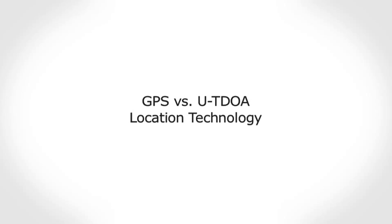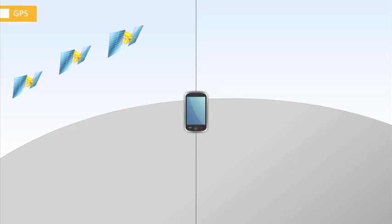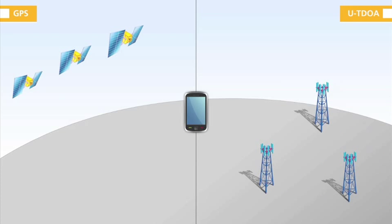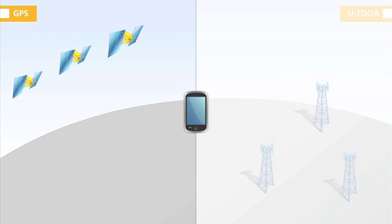The two main technologies used to locate mobile phones are GPS and Uplink Time Difference of Arrival, or UTDOA. GPS uses a chip within the mobile phone to receive signals from orbiting satellites. It determines the distance to each satellite and calculates the location of the mobile phone.